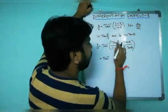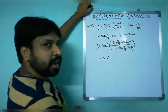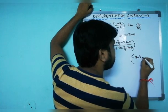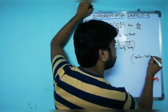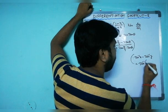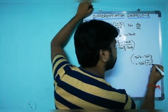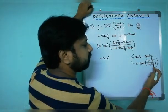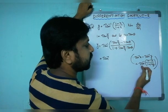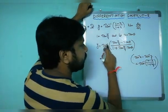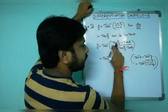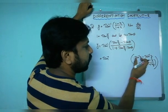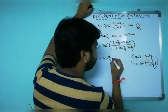The formula tan⁻¹(x) minus tan⁻¹(y) equals tan⁻¹((x minus y) divided by (1 plus xy)). Using this formula in reverse: tan⁻¹((x minus y)/(1 plus xy)) equals tan⁻¹(x) minus tan⁻¹(y). Here x is tan(π/4) and y is tan θ, so we apply this formula accordingly.